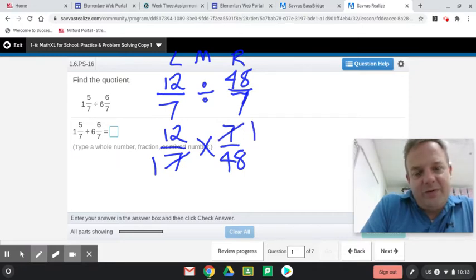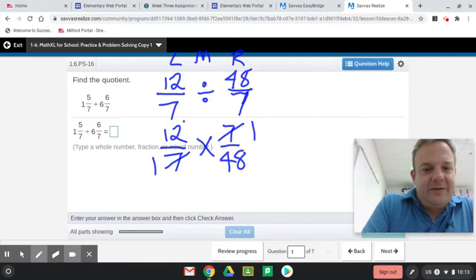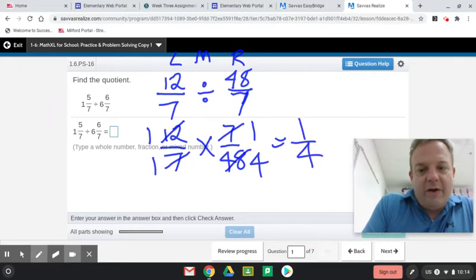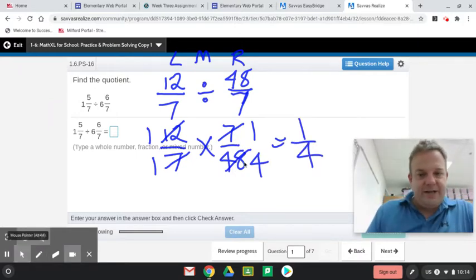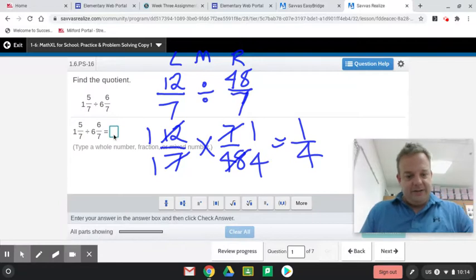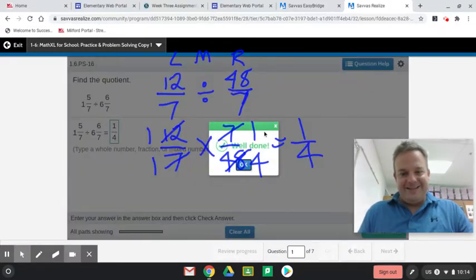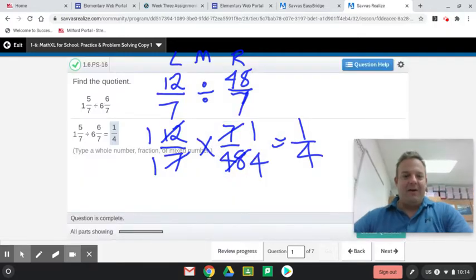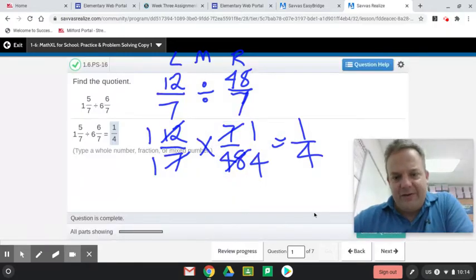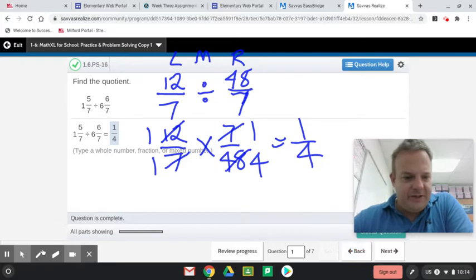What goes into both 12 and 48? That's right, 12. So 12 divided by 12 is 1, 48 divided by 12 is 4. We multiply across and we get 1 fourth. Let's see if that works. All right, we did it. Now, of course, your numbers and fractions are different than mine, but we follow the same process, right? So you can have this on while you're working, and we'll do it together.